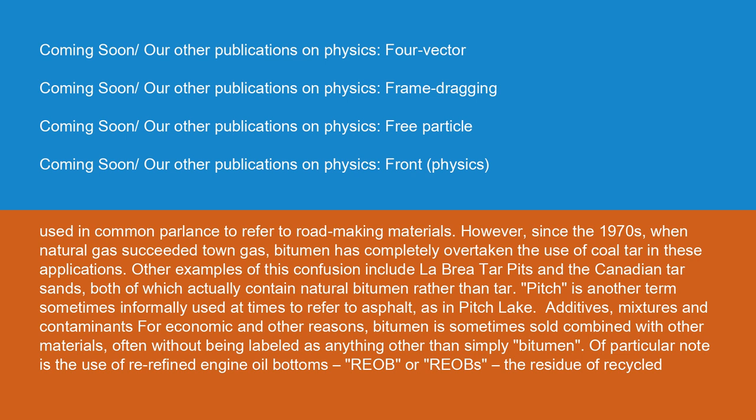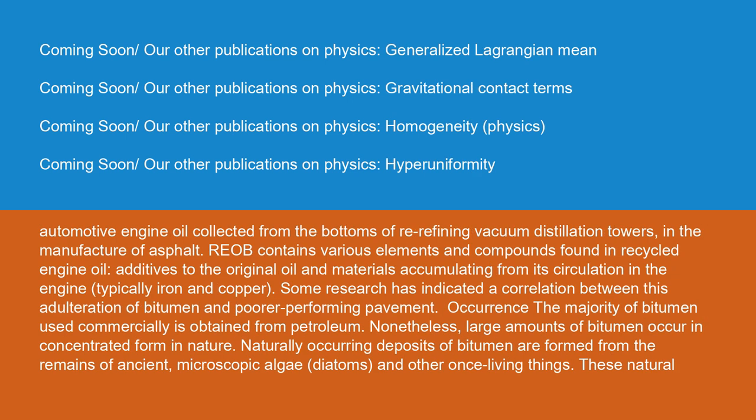For economic and other reasons, bitumen is sometimes sold combined with other materials, often without being labeled as anything other than simply bitumen. A particular note is the use of re-refined engine oil bottoms (REOB or REOPS) — the residue of recycled automotive engine oil collected from the bottoms of re-refining vacuum distillation towers — in the manufacture of asphalt. REOB contains various elements and compounds found in recycled engine oil, additives to the original oil, and materials accumulating from its circulation in the engine, typically iron and copper. Some research has indicated a correlation between this adulteration of bitumen and poorer-performing pavement.